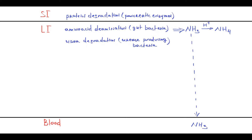Whether an ammonia molecule crosses the intestinal lining depends on the quantity of available hydrogen protons. To prevent the production and absorption of ammonia, lactulose is prescribed. Lactulose is a synthetic disaccharide made up of galactose and fructose. The most important feature of lactulose is that intestines don't have any enzyme to split it, so it is a non-absorbable sugar.